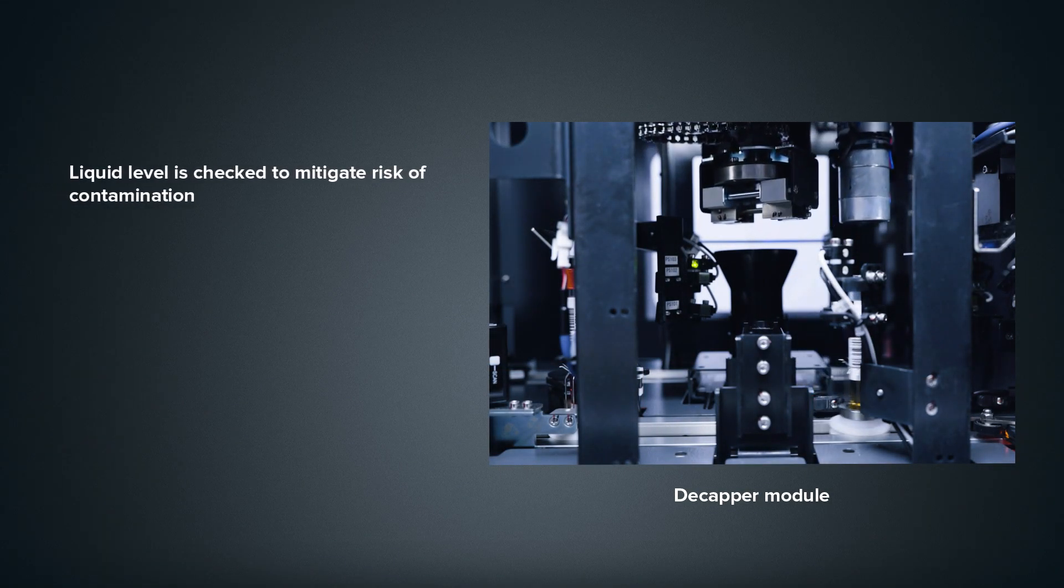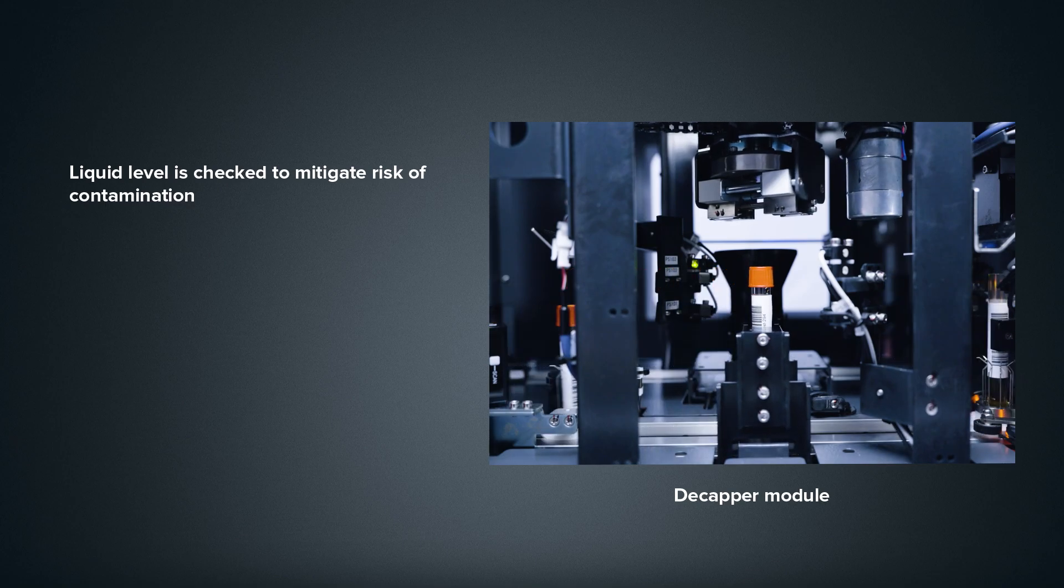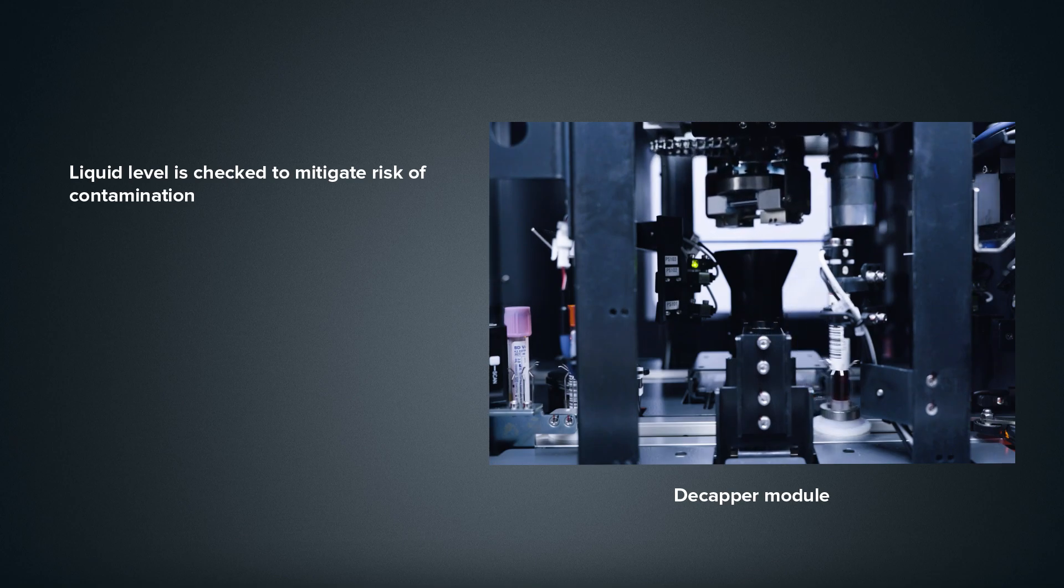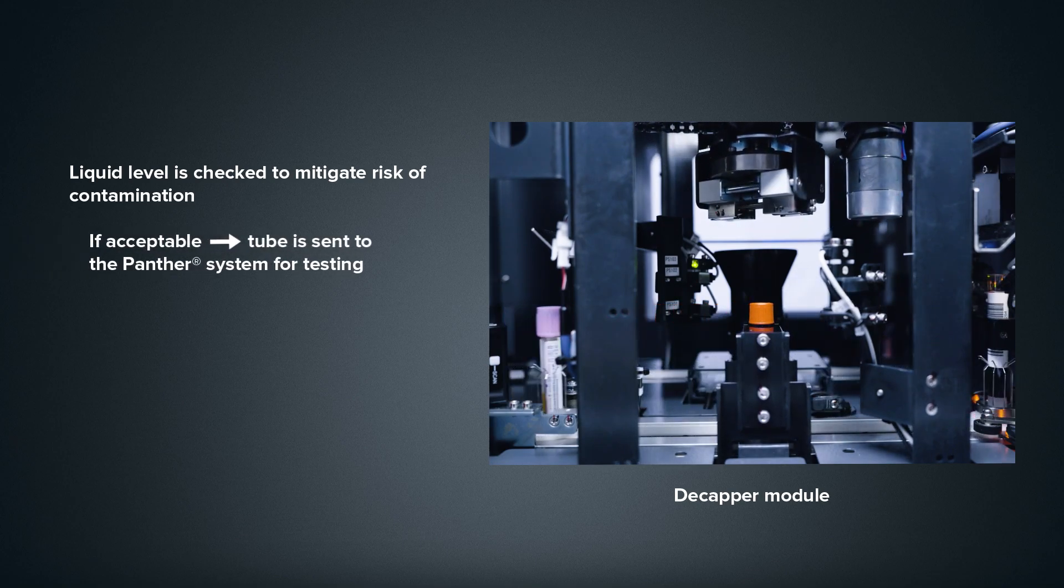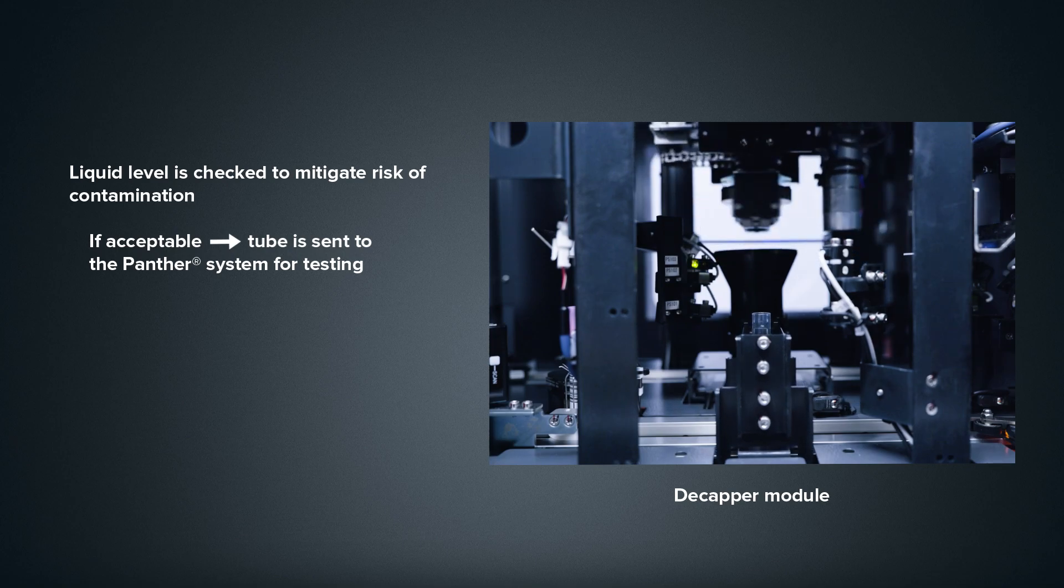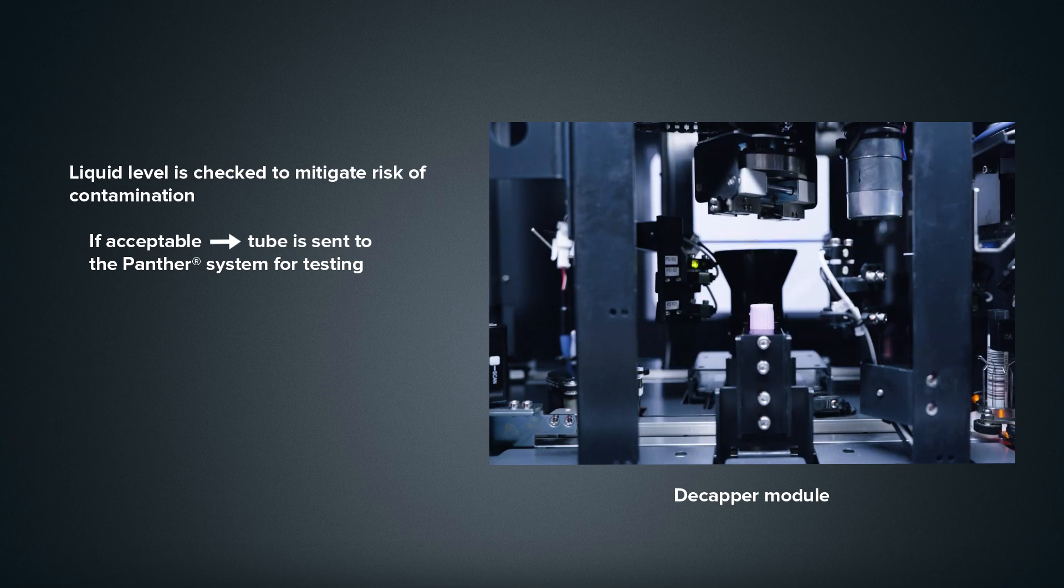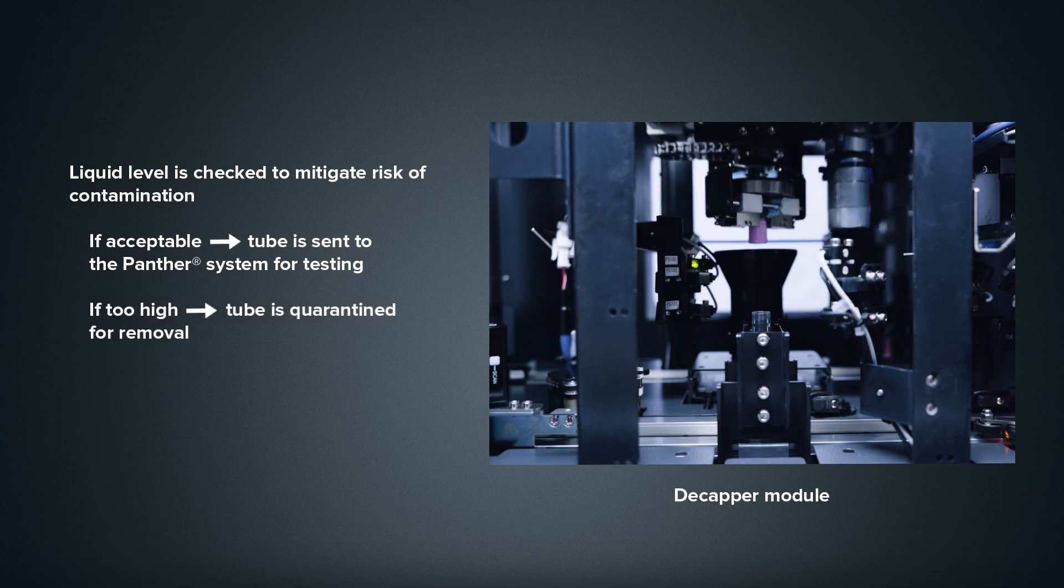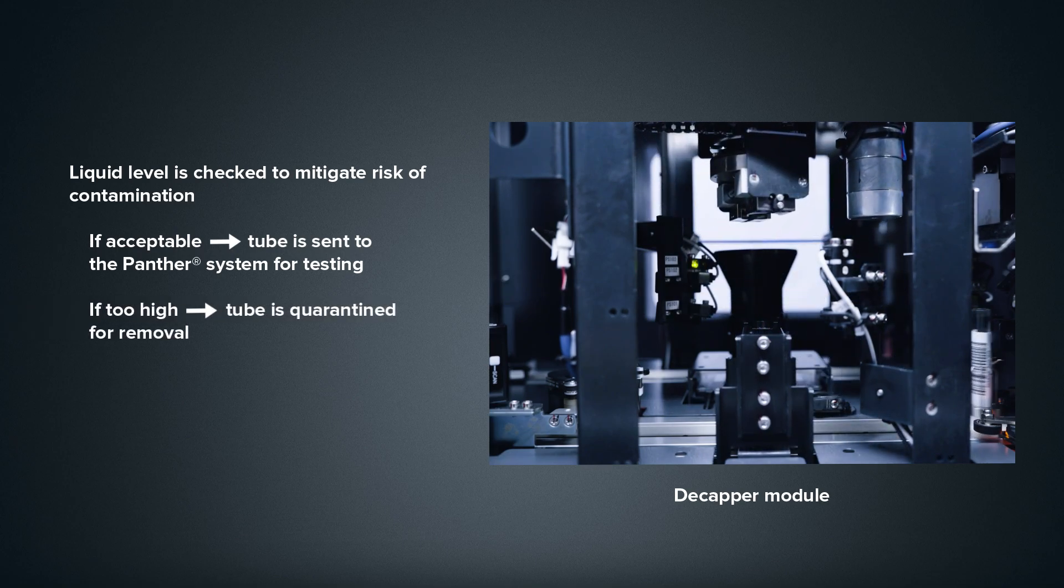While in the Decapper, the tube is uncapped and the liquid level is checked to ensure there is no risk of spills or aerosols that could lead to contamination. If the liquid level is acceptable, the tube is sent to the Panther system for testing and then back to the Recapper to be sealed before being placed into storage. If the liquid level is found to be too high, the tube is quarantined for removal.